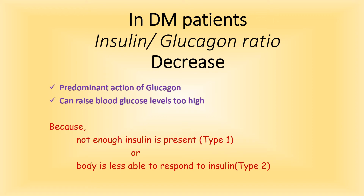Today we are going to talk about diabetes mellitus and its alterations in carbohydrate metabolism. In DM patients, the insulin to glucagon ratio decreases because, as in type 1, there is not enough insulin in the body, or as in type 2, the body is less responsive to insulin. So the actions of glucagon become predominant and it will raise the blood glucose level too high.